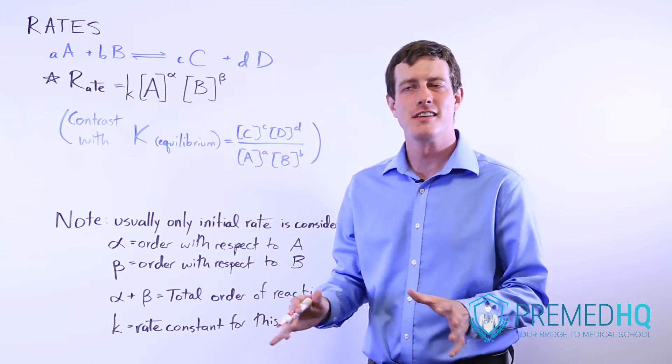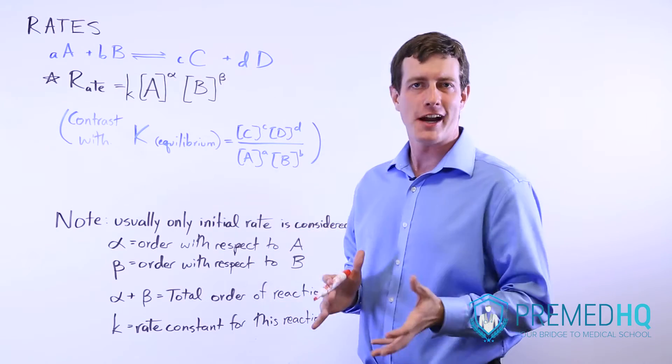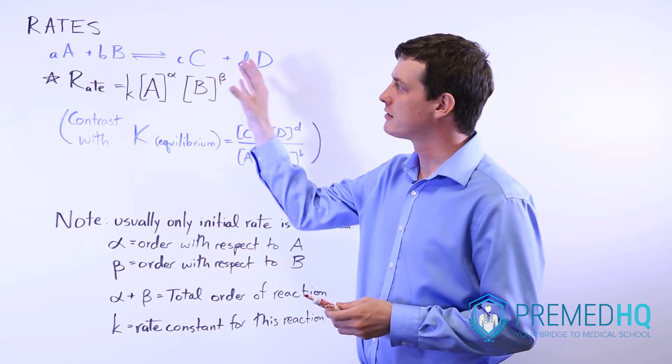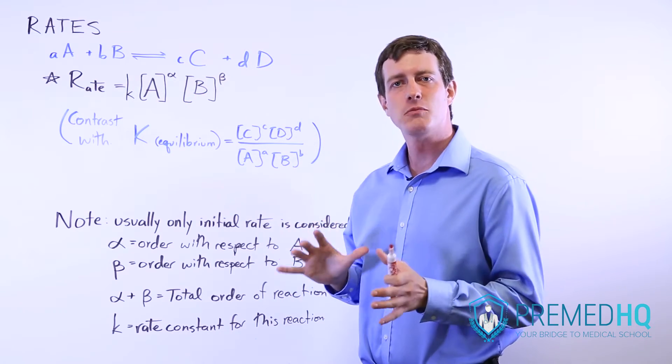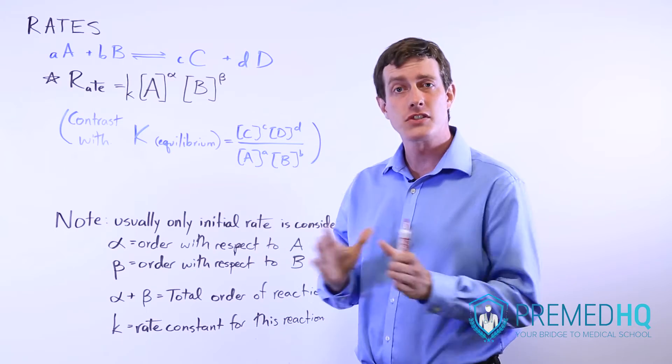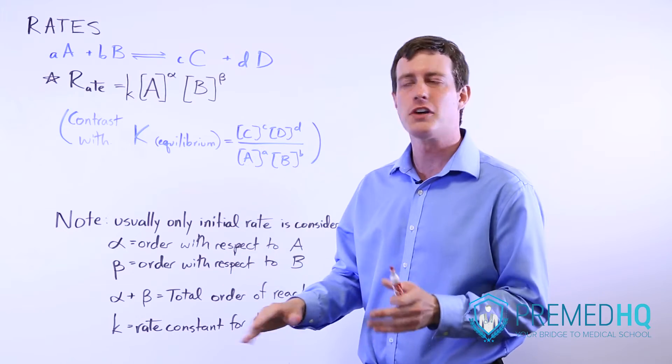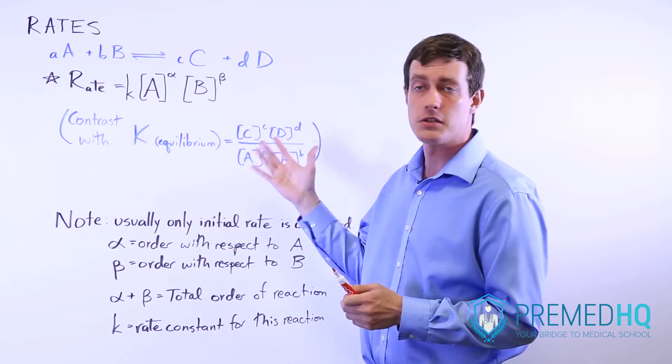Chemical rates measure the speed at which a reaction occurs, and we'll be going through some of the basics of rates here and contrasting them with equilibrium. I think a lot of students get rate and equilibrium confused with each other, so we'll go through the contrasts and how they relate to each other.